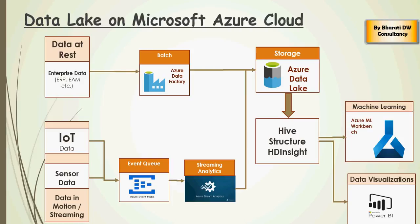Now let's take a look step-by-step again at how to do it. In the next video, I'm going to create an event hub, referencing this architecture. We will simulate some sensor data using Python scripts, which would be publishing the data onto the Azure Event Hub. And from there, we are going to get streaming analytics up and running in order for this data to be absorbed in the Azure data lake, as well as in Power BI.